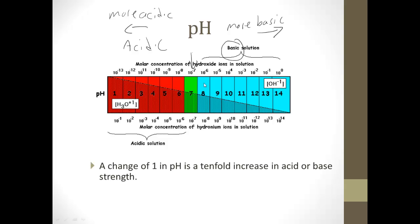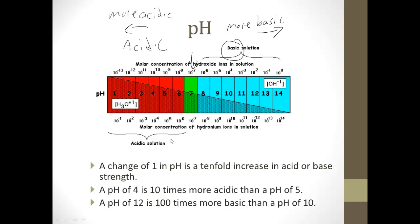A change of 1 in pH is a tenfold increase in acid or base strength. So, as we go from a pH of 5 to a pH of 4, the acid is 10 times stronger, not just 1 times stronger. When you go from a pH of 4 to pH of 3, it's 10 times more stronger. So, going from a 5 to a 3, it's not 20 times stronger, it's actually 100 times stronger, because we keep multiplying by a factor of 10. So, a pH of 4 is 10 times more acidic than a pH of 5. A pH of 12 is 10 times more basic than a pH of 11, but it's 100 times more basic than a pH of 10.